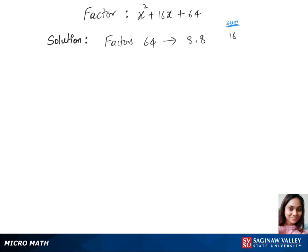It matches up with our middle term's constant, and we can use these values and plug them into our expression. So that's (x + 8)(x + 8), and we can also write this as (x + 8) whole square. This is our final answer.